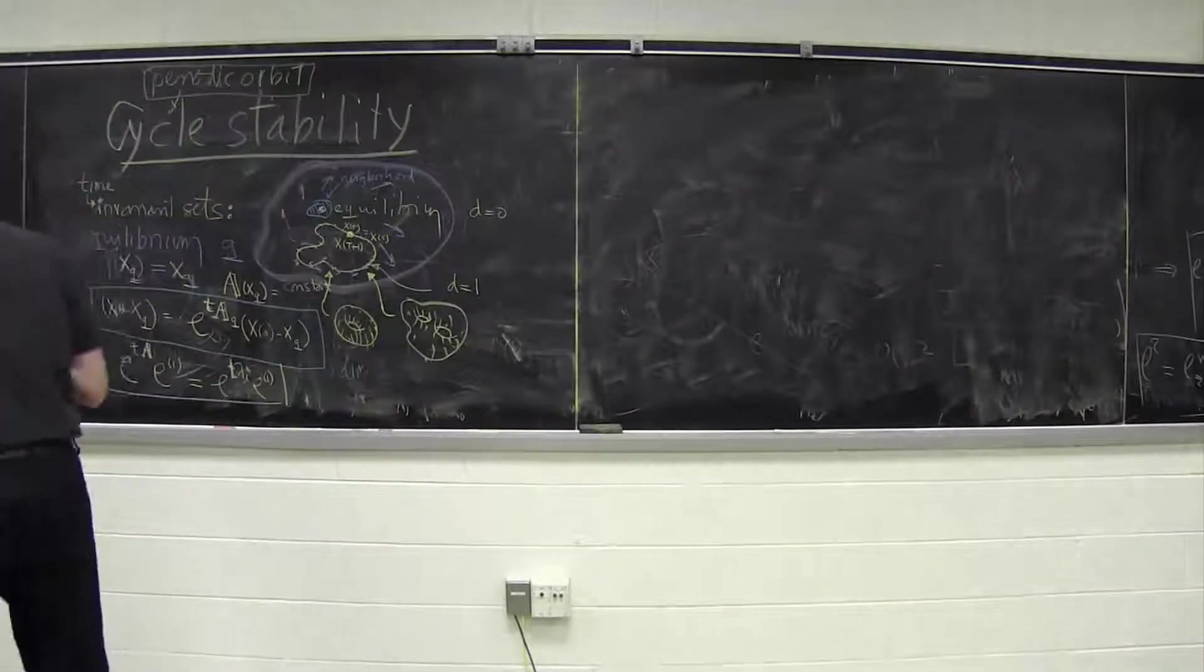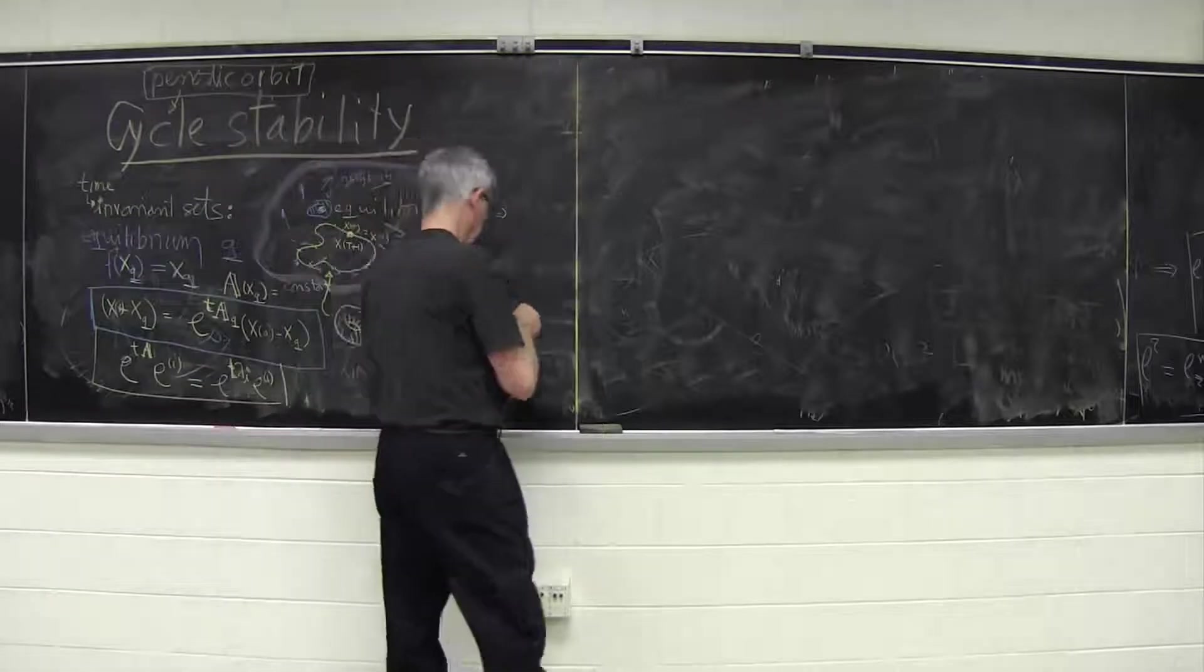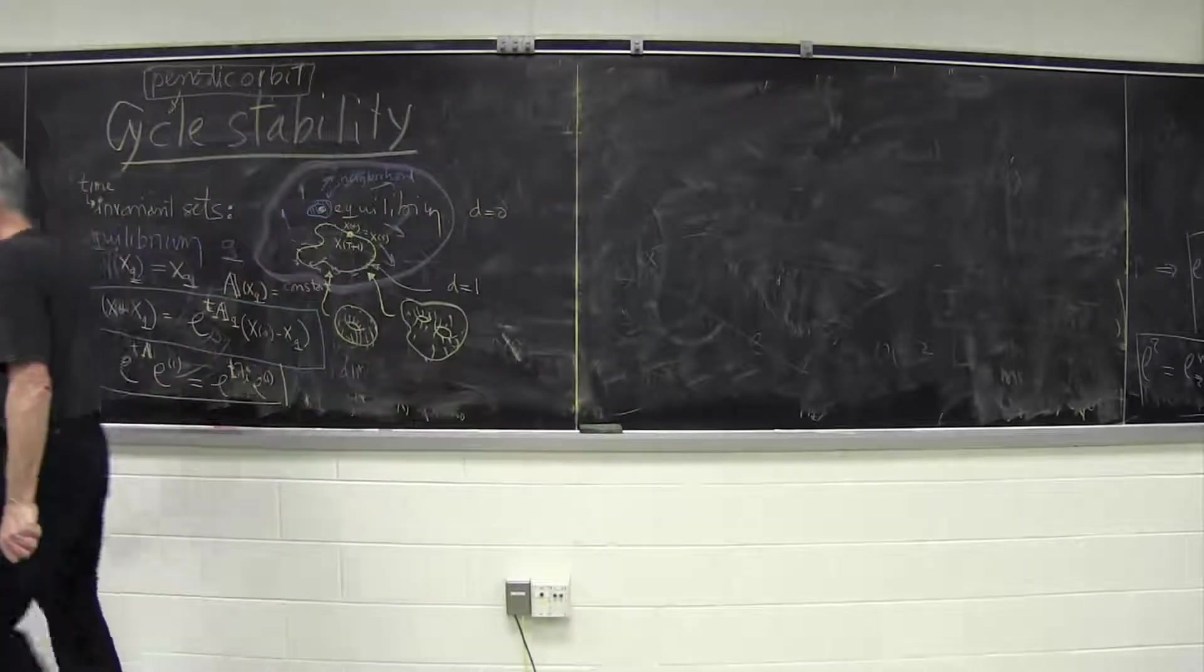What about the next object of interest? That would be a periodic orbit. So what is the stability of periodic orbit?